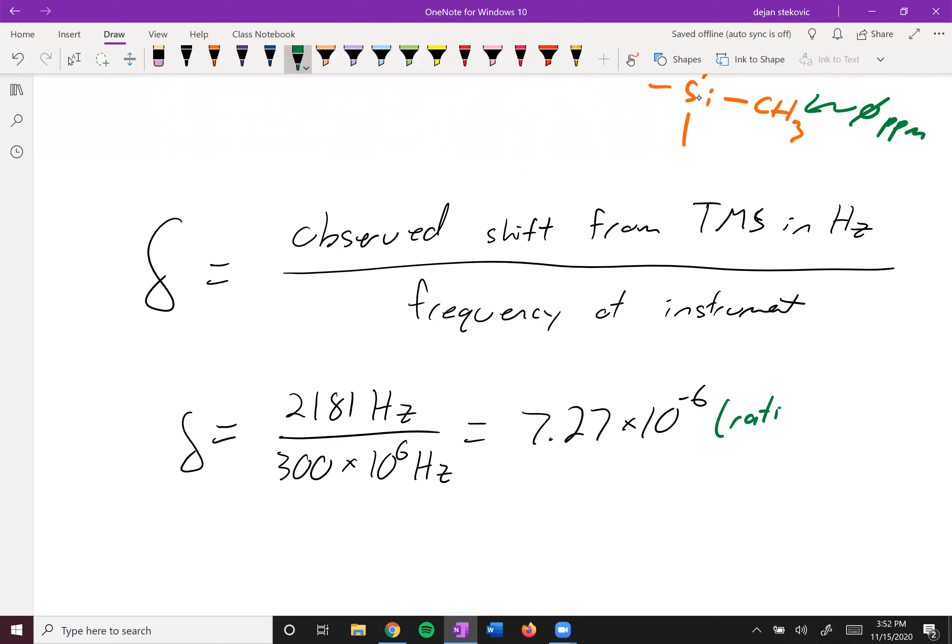And so this is a ratio, because it's hertz over hertz, and so it's unitless. Then we see the numerical value right here, up here is 10 to the minus 6, which is a millionth. And so that's where we get the parts per million, 7.27 ppm. The ppm stands for parts per million.